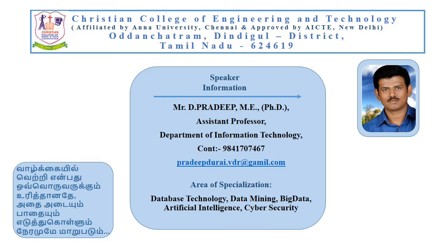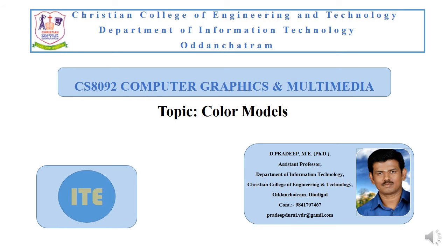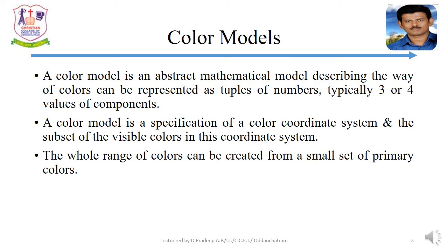Welcome to the session. Today we are going to discuss color models. A color model is an abstract mathematical model describing the way colors can be represented as a tuple of numbers — typically three or four values of components. A color model is a specification of a color coordinate system and the subset of visible colors in this coordinate system.